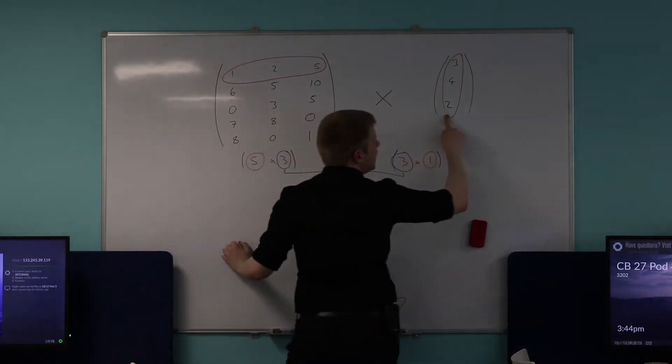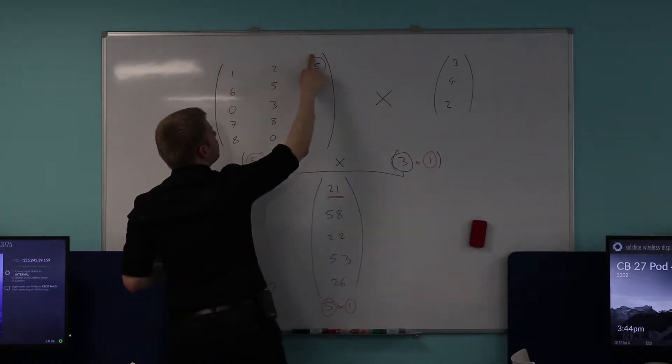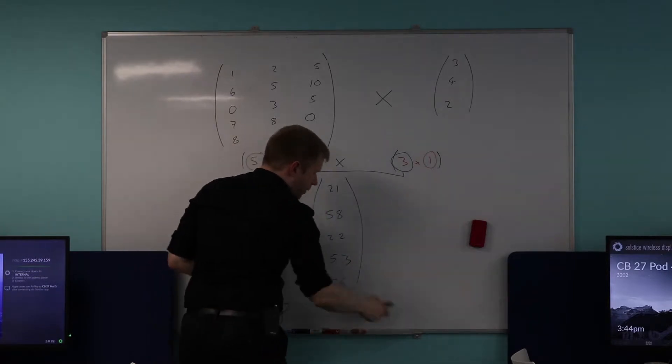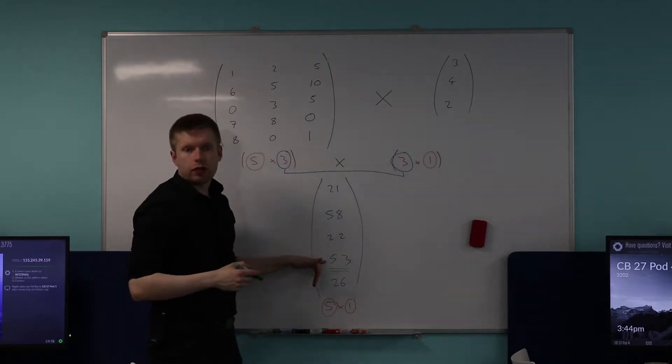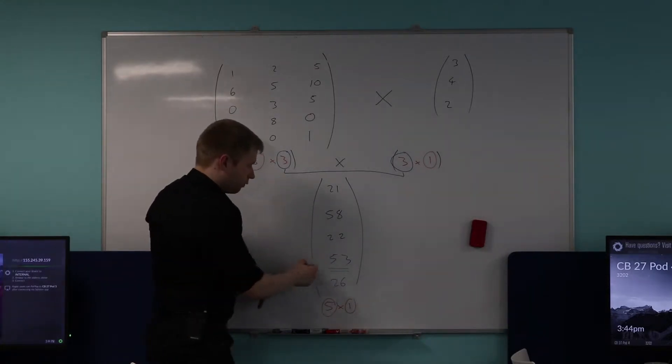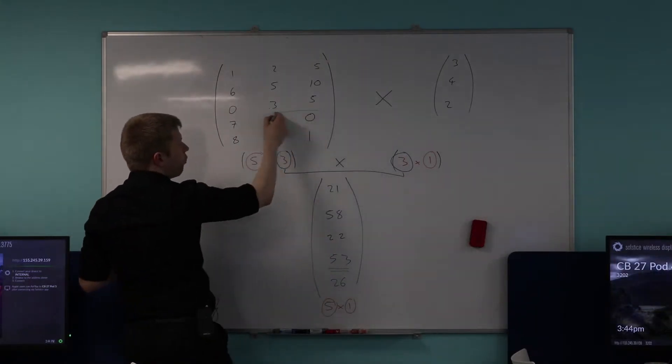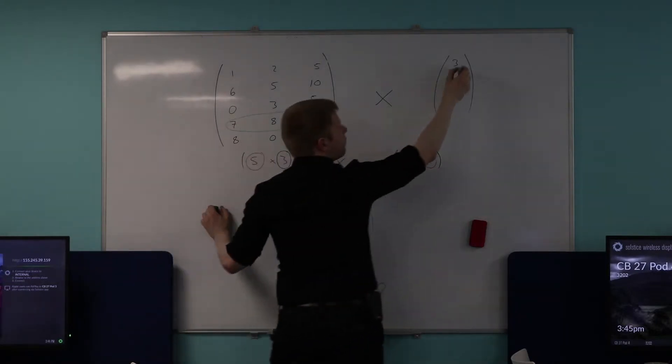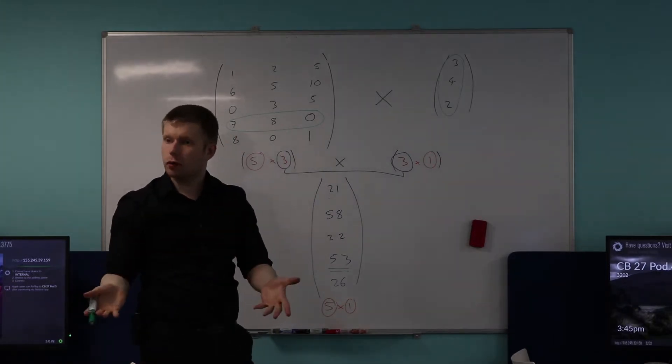Okay, so in which case then, just to illustrate the point, if I wanted to find this element here, well which element would this be in the resulting matrix? It would be the fourth row and the first column, yeah? In the resulting matrix, in the fourth row, because one, two, three, fourth row and the first column. Which means that I would use the fourth row from the first matrix and the first column from the second matrix, and I would multiply corresponding elements together just like I was doing above. So seven multiplied by three plus eight multiplied by four plus zero multiplied by two would give me 53.